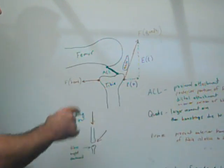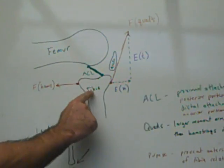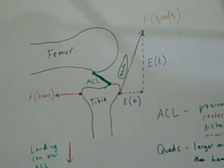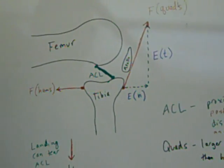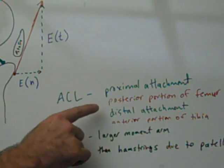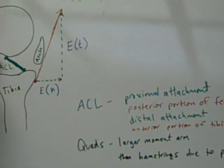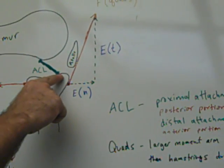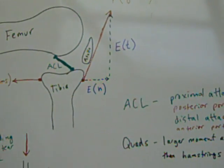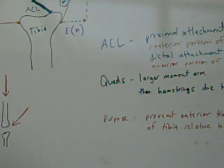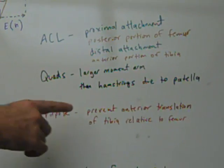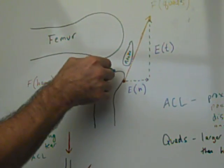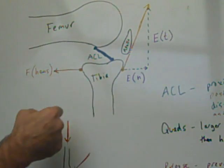So here I kind of drew a picture. Here's the femur, this is the tibia, and here's the ACL. ACL stands for anterior cruciate ligament. So the proximal attachment of the ACL is on the posterior portion of the femur, and the distal attachment is on the anterior portion of the tibia. And the purpose is to prevent anterior translation of the tibia relative to the femur. So the purpose of the ACL is to kind of hold the tibia from gliding forward.